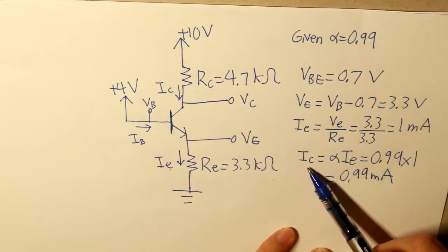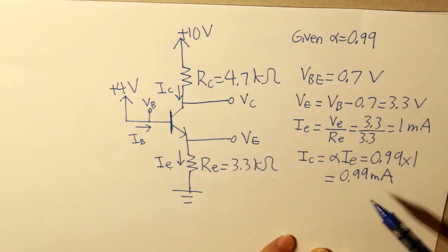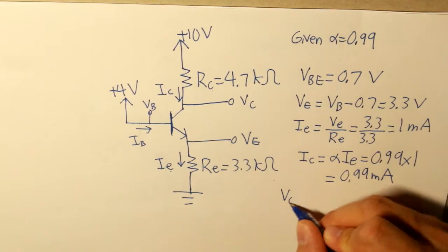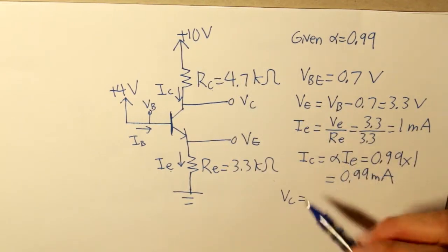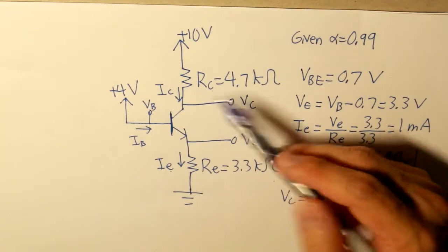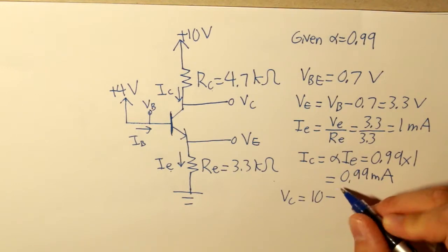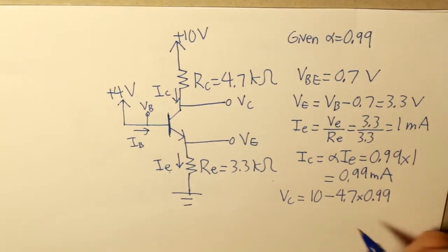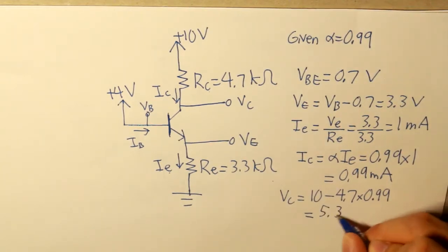Now that we got IC, now we can find what VC is. So VC is equal to the voltage 10 subtracted by the current passing through this collector resistance. So that is 4.7 multiplied by the collector current, and what we get is 5.3 volts.